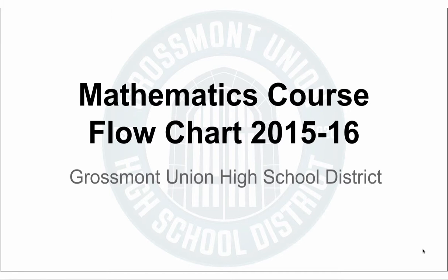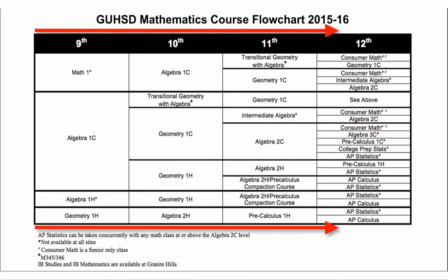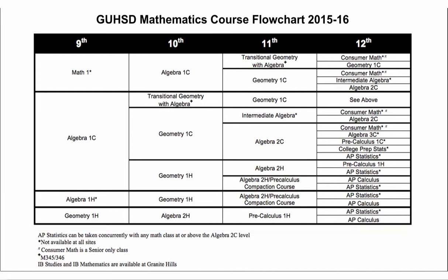Hello and welcome to the Grossmont Union High School District Mathematics Course Flowchart for the 2015-16 school year. The flowchart takes into account student progression through mathematics education 9th through 12th grade, which you'll see horizontally across the top and vertically as you read down the years. As you can see, it's a complex, complicated, and comprehensive approach to supporting mathematics learning for all students in the Grossmont District regardless of where they entered.